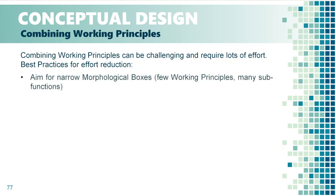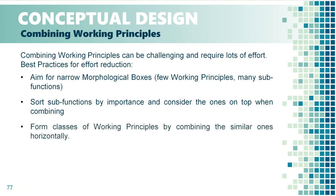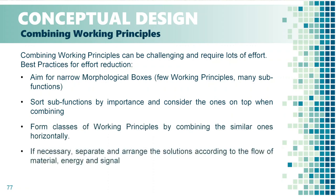First, you should aim for narrow morphological boxes. Try to decompose your function structure into a higher number of sub-functions and then list only a few of the most relevant working principles for each of them. Try to establish critical sub-functions and put them on top of the morphological box — it will force you to directly address the functionalities that are most important for fulfilling the requirements. Another way of making the process more efficient is grouping similar working principles, which will allow you to assess them together. In some cases, splitting the morphological box into smaller ones dedicated to particular flows and solving them separately might also help.